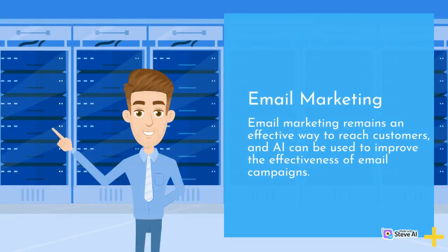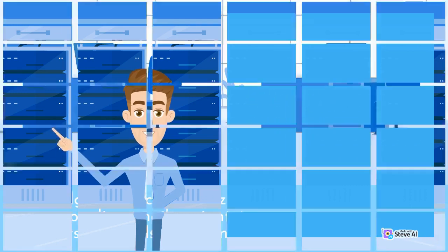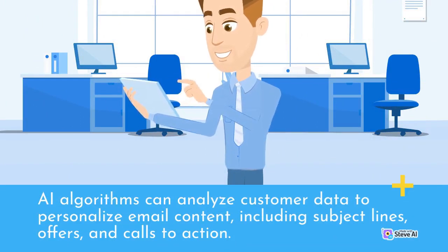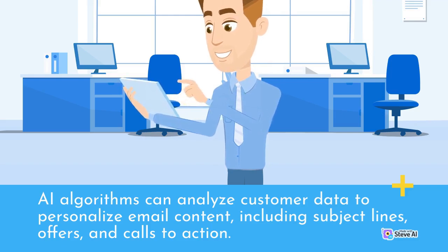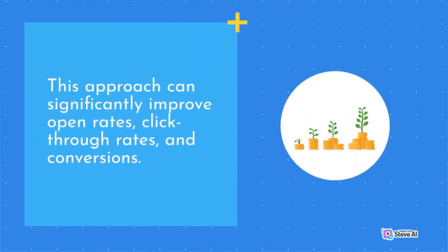Email marketing remains an effective way to reach customers, and AI can be used to improve the effectiveness of email campaigns. AI algorithms can analyze customer data to personalize email content, including subject lines, offers, and calls to action. This approach can significantly improve open rates, click-through rates, and conversions.